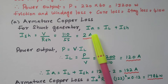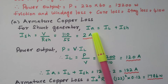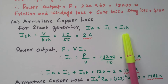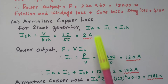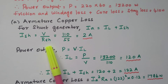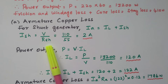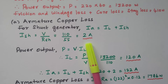For a shunt generator, Ia = IL + Ish. Armature current equals load current plus shunt field current; the sum of these two is the armature current. Ish can be calculated as V divided by Rsh, because the shunt field is connected across the load and the same voltage is available across the armature as well as the shunt field. So 110 divided by 55 equals 2 amperes.